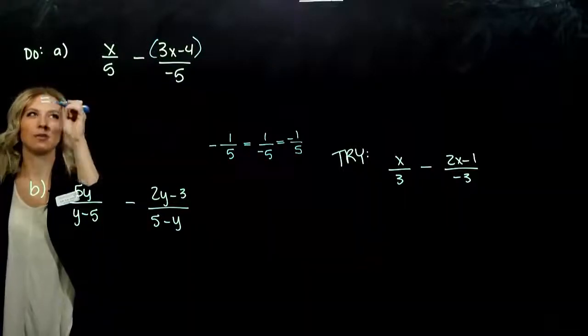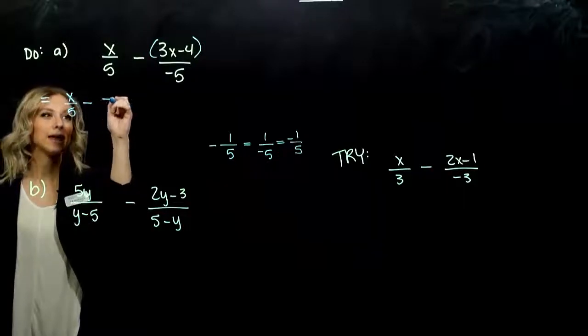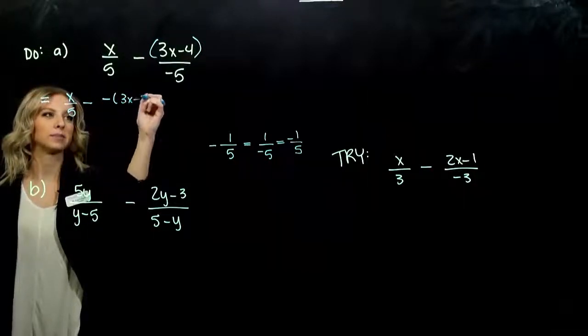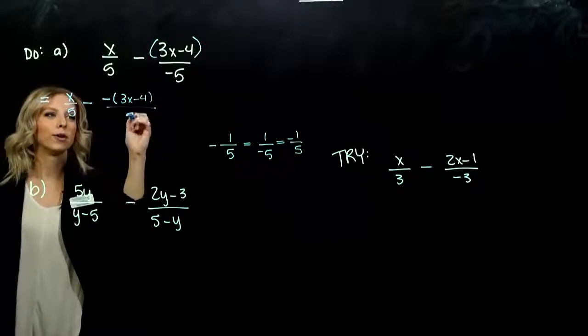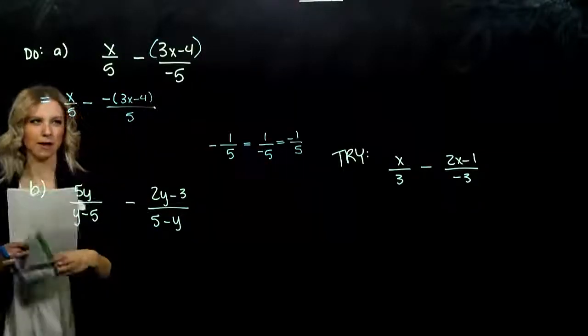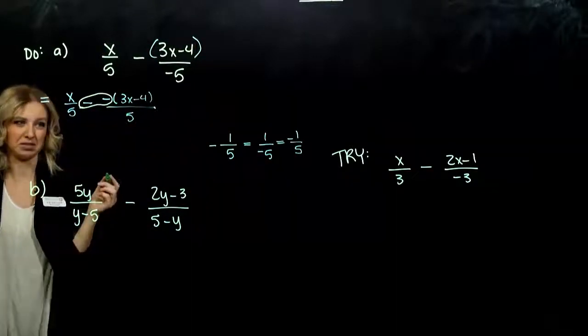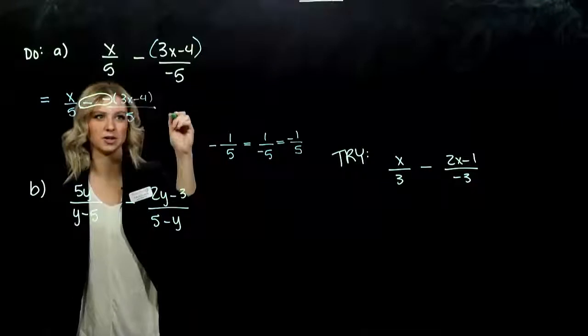I can take that term and put the negative up to the top. If I do that, what am I looking at? X to the fifth minus, now negative up top, 3x minus 4, over positive 5. When we do it in that way, what does this minus a minus turn into? A positive. And it makes everything easier as well.